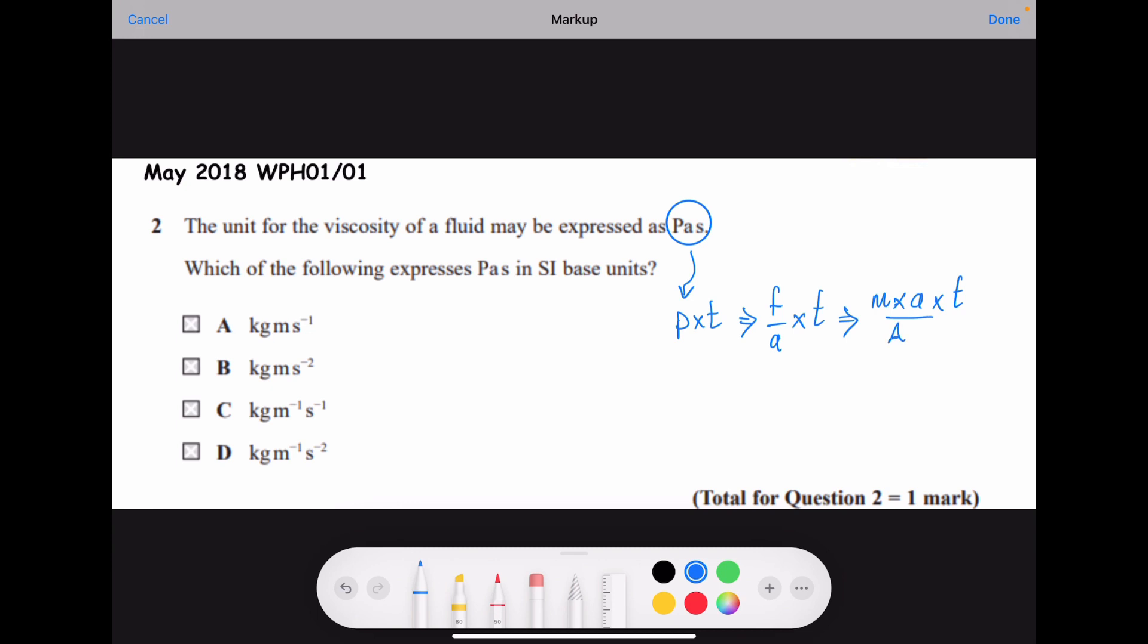The mass is measured in kilogram and the acceleration is meter second minus two. The time is measured in second. Cross-sectional area is meter square. So the SI base unit is kilogram, and then one meter cancels with one of the squares, giving meter minus one second minus one.